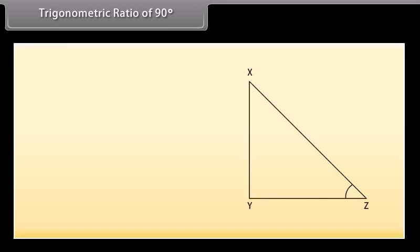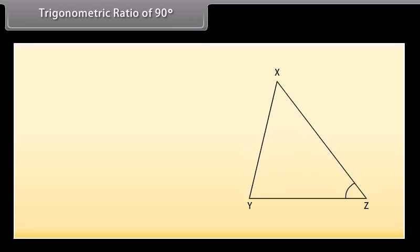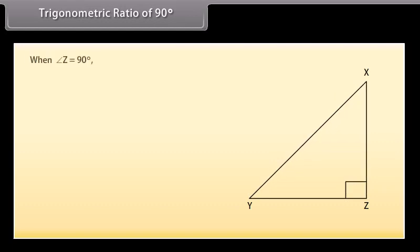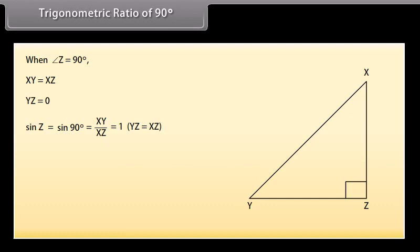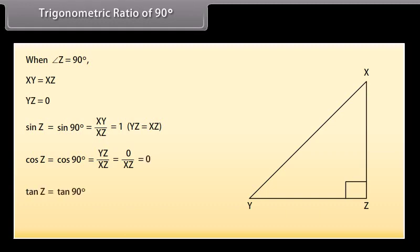Trigonometric ratio of 90°. Consider the right-angled triangle XYZ. Increase the measure of angle Z slowly. You can see that XZ rotates right and becomes steeper. When angle Z is increased to 90°, XZ merges with XY and the length of YZ is 0. Therefore: sin 90° = XY/XZ = 1, as XY equals XZ; cos 90° = YZ/XZ = 0/XZ = 0; tan 90° = XY/YZ = XY/0 — therefore, tan 90° is undefined. Let us summarize our exercise in a table.